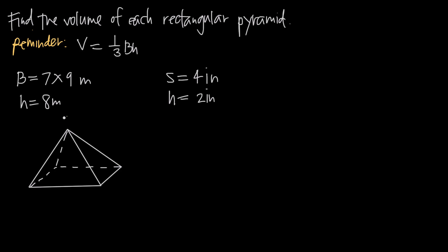If I look at this pyramid here and draw in the altitude, which starts at the vertex of the pyramid at the top and goes down until it gets to the base, the height of this pyramid is the length of that altitude. So this is going to be the height. And the base, again, is going to be the area of the base.